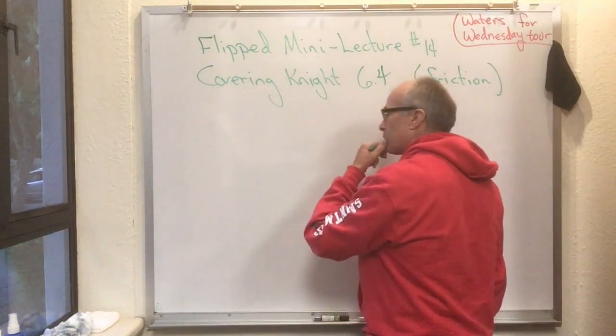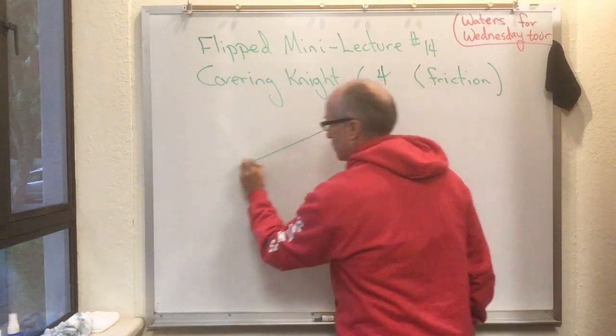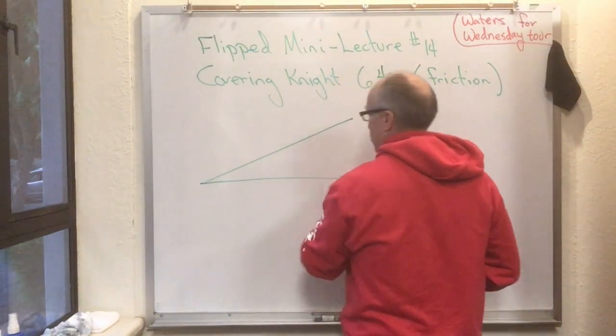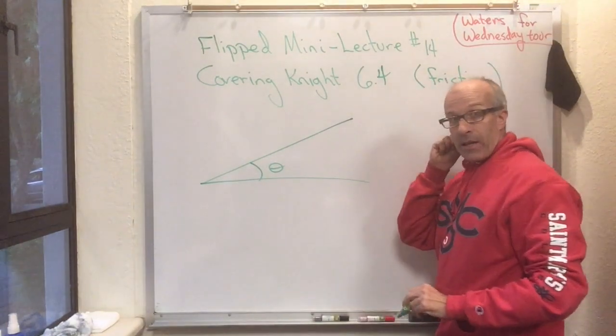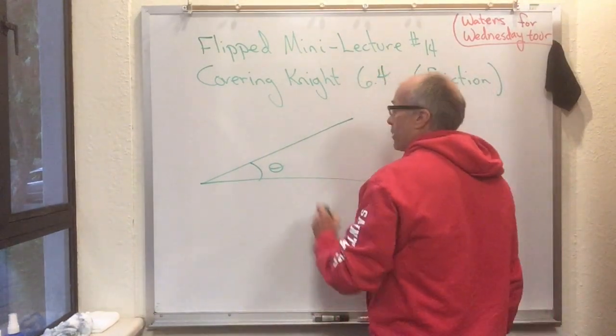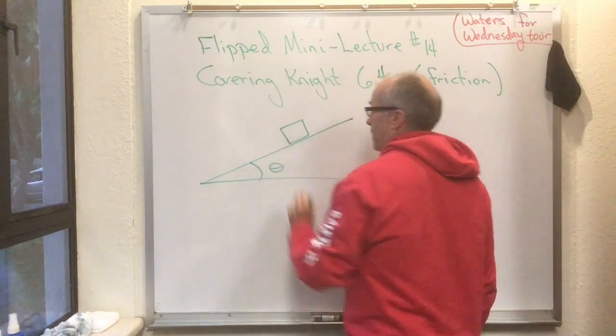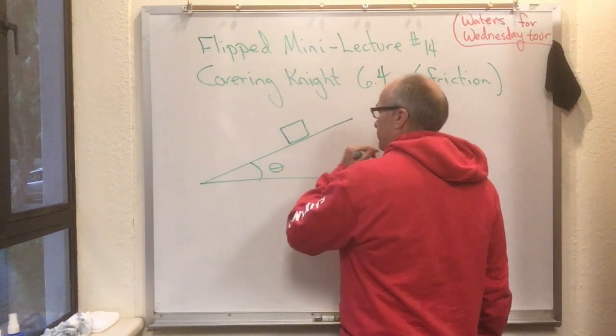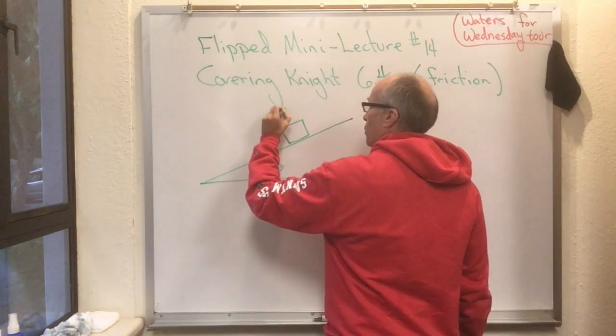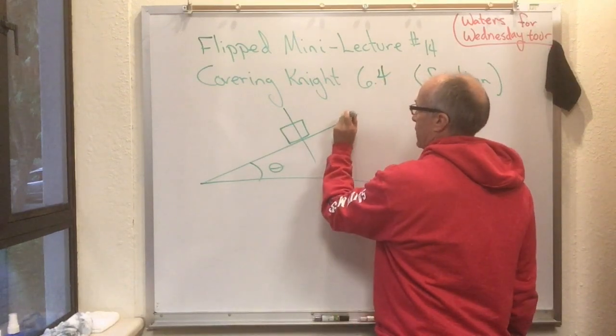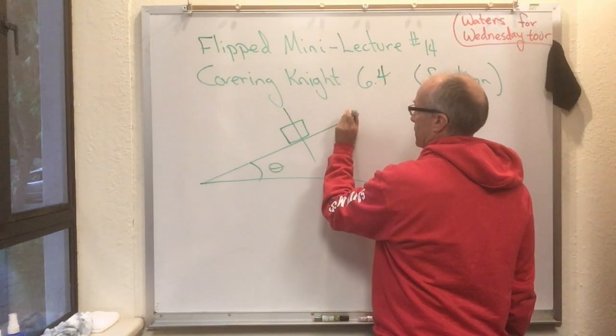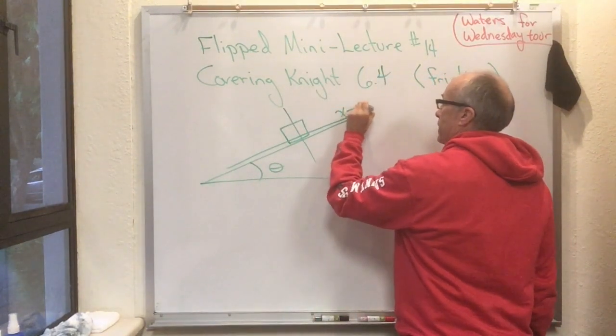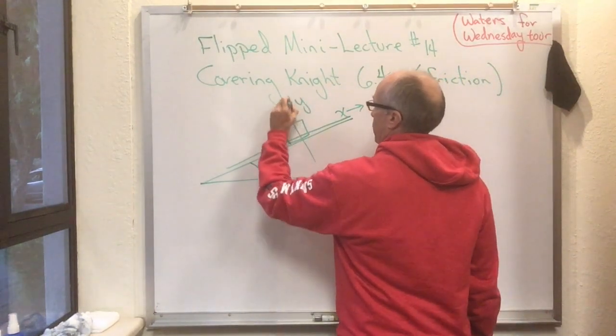So if you have a plane, just drawing it here at some arbitrary angle, and you have some object, for simplicity let's make it a box that's sitting on the plane. You can always choose your coordinate system however you like, and in this case it often makes sense to choose the coordinate system parallel to the plane, or I might call that the positive x direction, and the positive y direction.